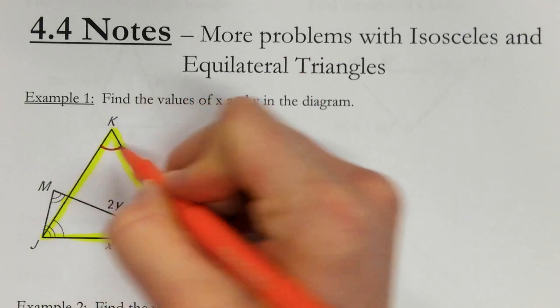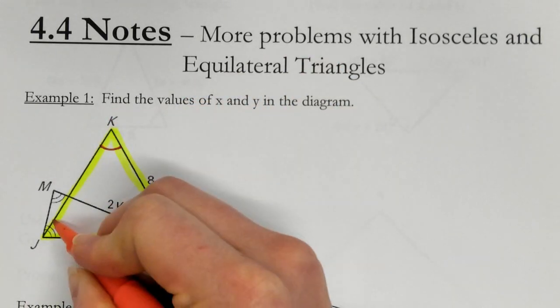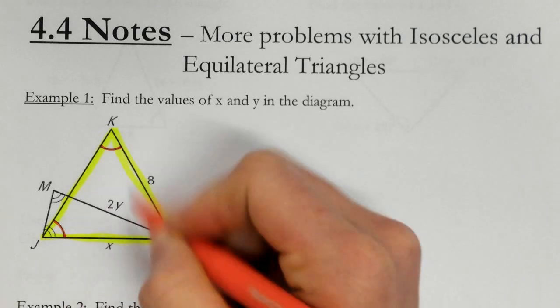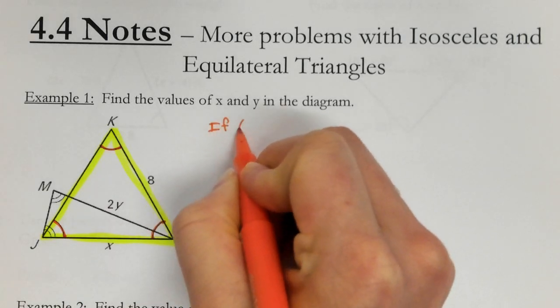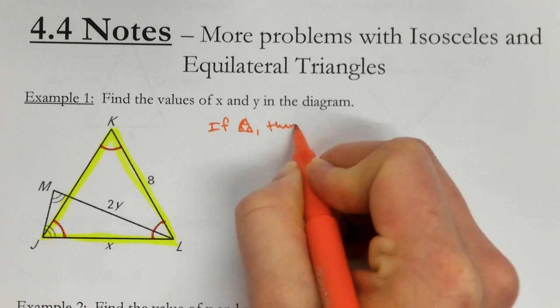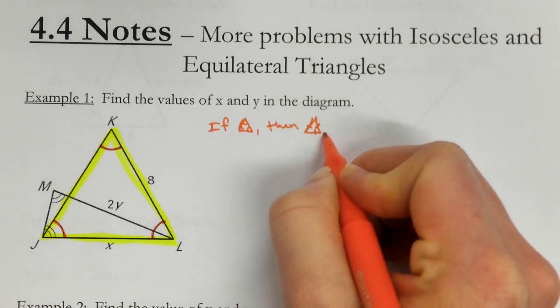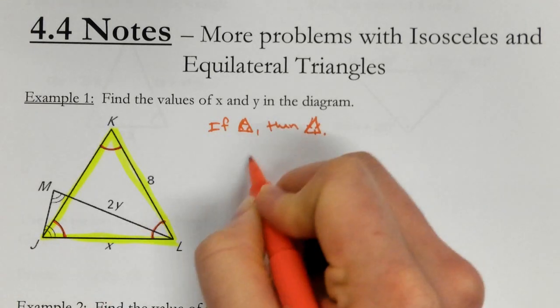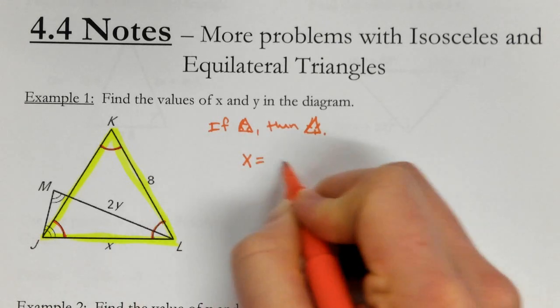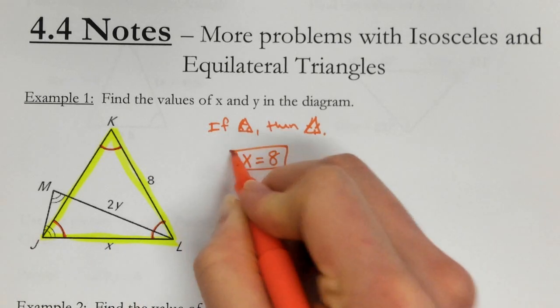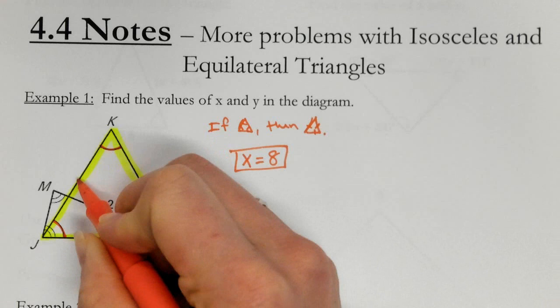And if we see, you see these tick marks here. So that means if all angles are congruent, then all sides are congruent. So that means x is going to equal 8 because all these sides are going to be the same.